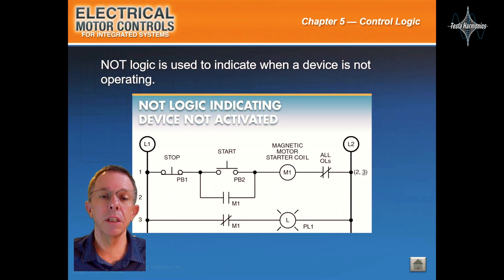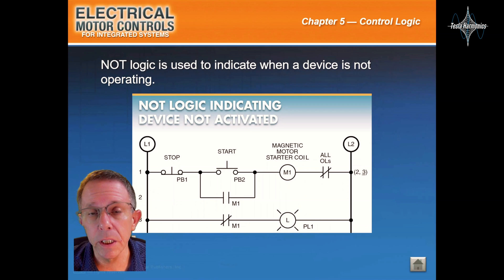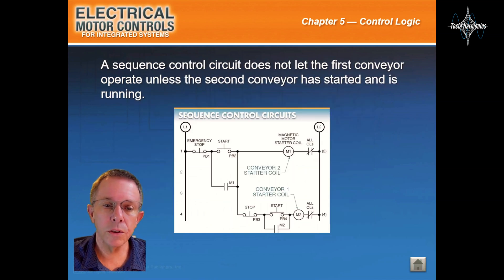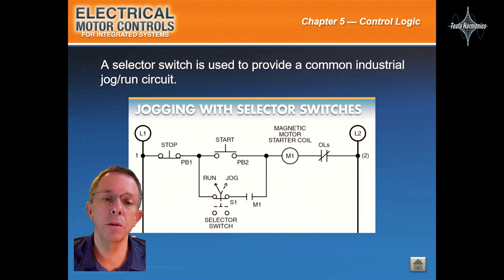NOT logic is used to indicate when a device is not operating. A sequence control circuit does not let the first conveyor operate unless the second conveyor has started and is running. A selector switch is used to provide a common industrial jog slash run circuit.